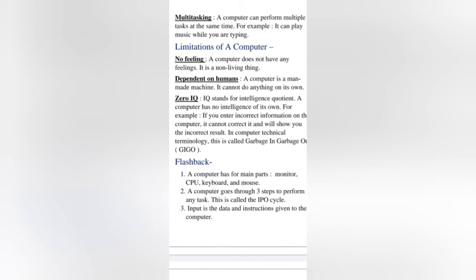Second limitation is dependent on humans. A computer is a man-made machine — it cannot do anything on its own. Computer cannot do anything without instructions. Whatever data and instructions a user gives, the computer takes action based on those. The computer cannot do the work by itself.